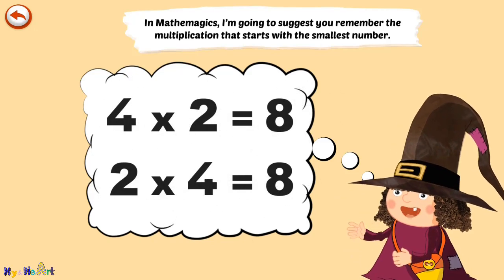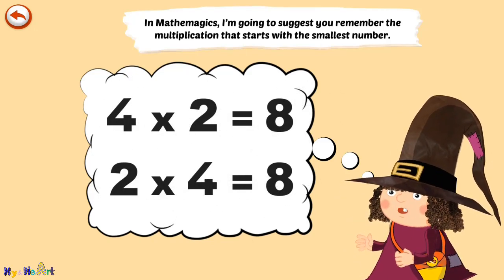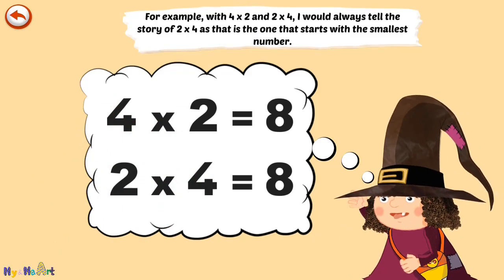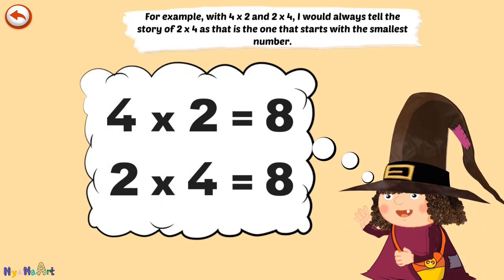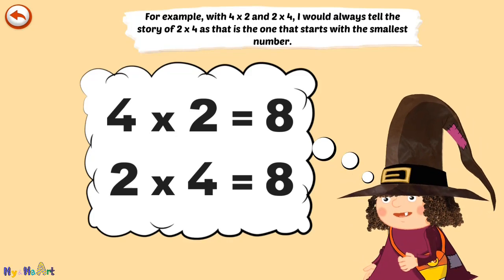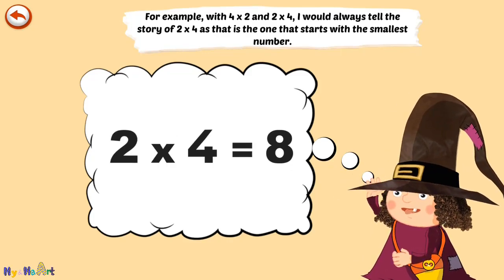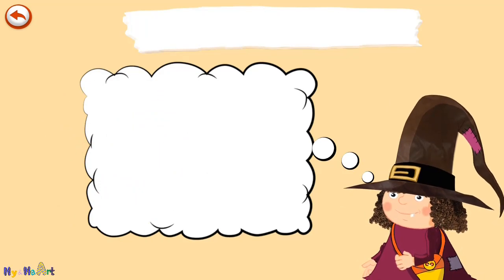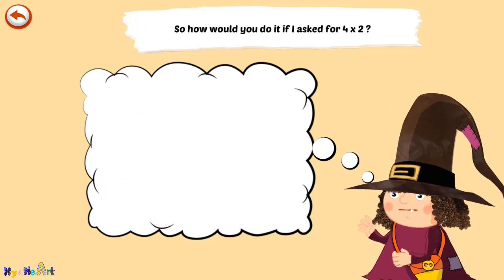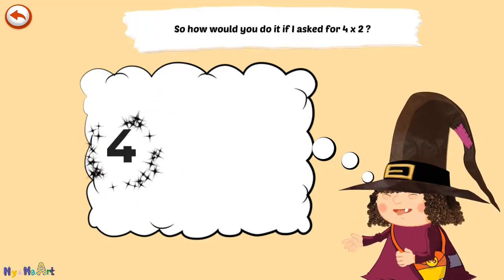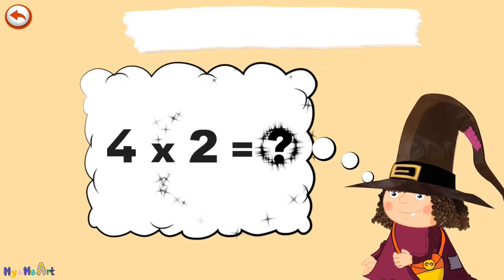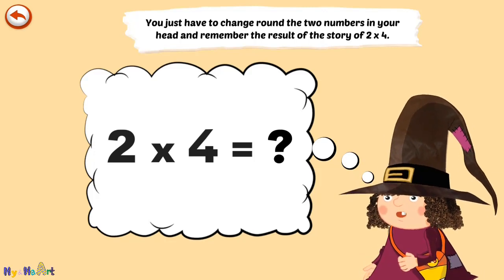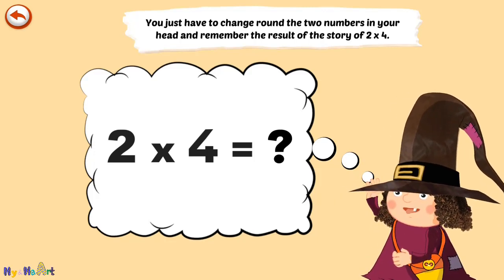In Mathemagics, I'm going to suggest you remember the multiplication that starts with the smallest number. For example, with 4 times 2 and 2 times 4, I would always tell the story of 2 times 4, as that is the one that starts with the smallest number. So how would you do it if I asked for 4 times 2? You just have to change round the two numbers in your head and remember the result of the story of 2 times 4.